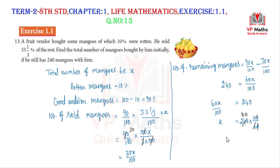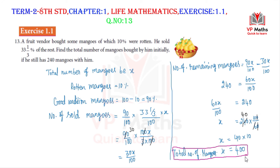Solving: x equals 240 multiplied by 100 divided by 60, which gives x equal to 400. So the total number of mangoes bought initially is 400. If you have questions, use the comment section for the next class.